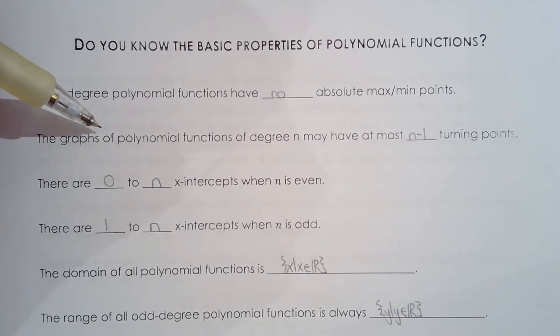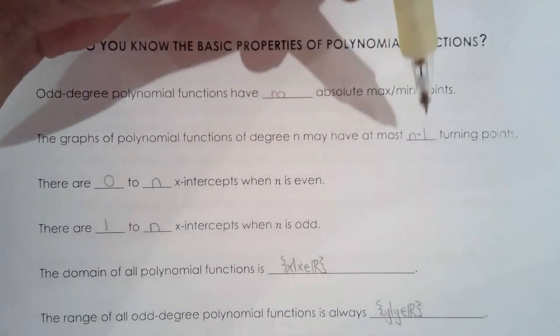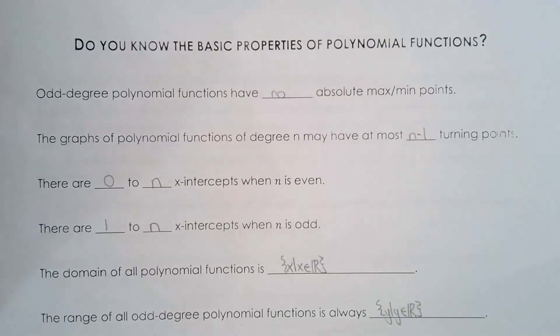The maximum number of turning points or the most known turning points is always n minus 1 regardless of the degree of the polynomial.